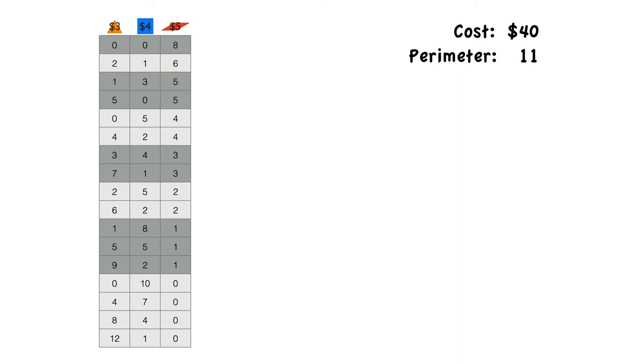So 8 rhombuses or you could choose 6 rhombuses, 1 square and 2 triangles. So these are all of the possible combinations. There's 17 of them.